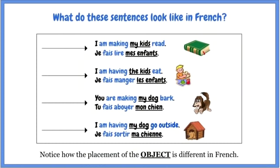Let's look at the rest of these sentences in French. You are making my dog bark: tu fais aboyer mon chien. Or, I'm having my dog go outside: je fais sortir ma chienne. The first dog is a little boy dog, mon chien. The second one is a little girl dog, ma chienne. Really take note of the placement of the object — how it's different in French. It comes at the end of the sentence.